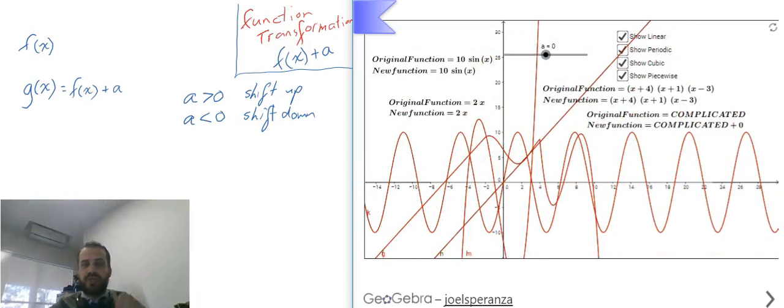So there's our first function transformation. Adding something to a function shifts it up; subtracting shifts it down.